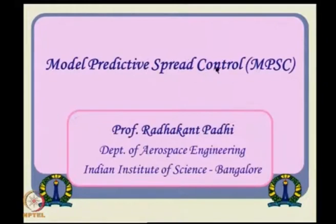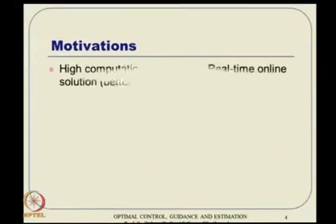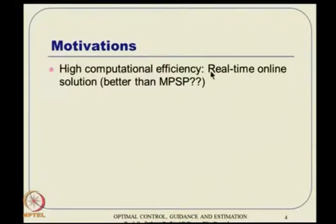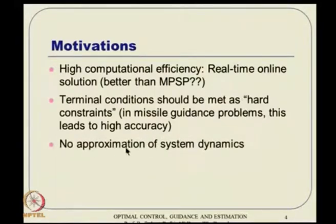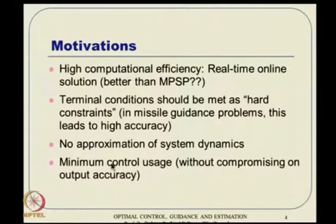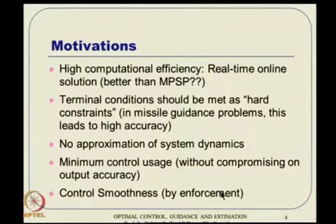Model predictive spread control, or parameterized MPSP, is motivated by: first, high computational efficiency — we do not want to compromise that aspect of MPSP; second, the terminal constraint should be met as a hard constraint, especially in missile guidance, leading to very high accuracy; third, no approximation of system dynamics and minimum control usage — similar to MPSP. Additionally, we ask: can computational efficiency be slightly better, and can control smoothness be guaranteed by enforcement rather than by luck?